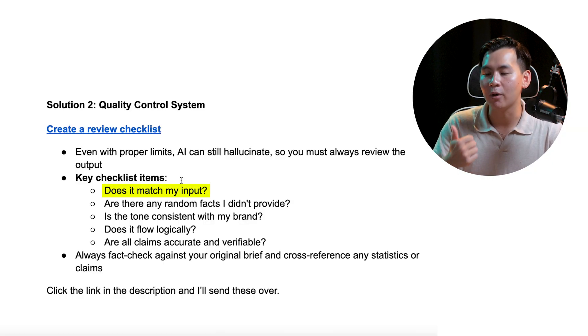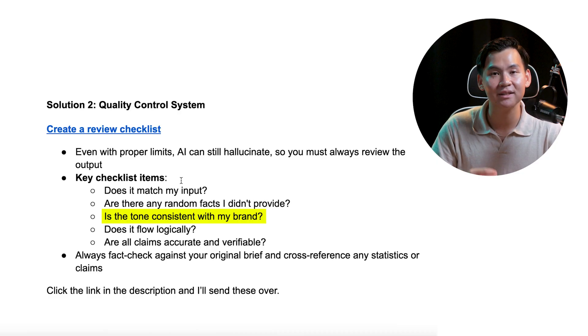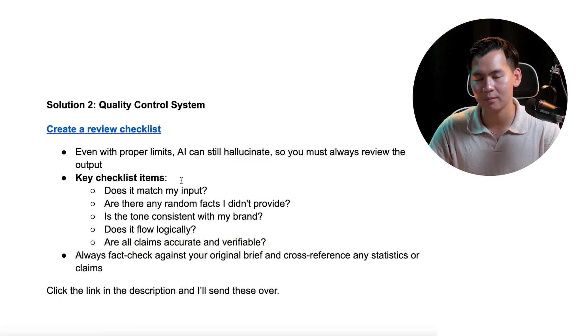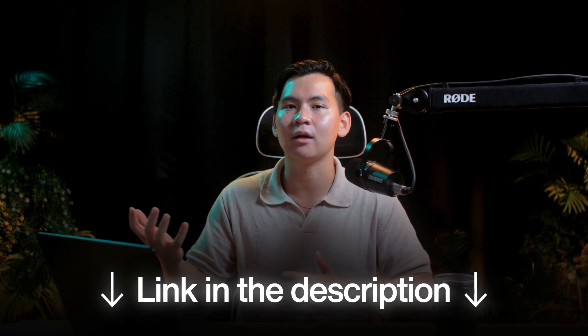If you don't want to go over the full list, the key things to look out for are: number one, does the output match my input? Number two, are there any random facts I didn't provide? Number three, is the tone consistent with my brand? Number four, does it flow logically? And number five, are all claims accurate and verifiable? You can always cross-check your actual script with your video brief and cross-reference any statistics to make sure it extracts the correct information. If you want this specific review checklist I use for every single script I write, click the link in the description and I'll send it right over to you.